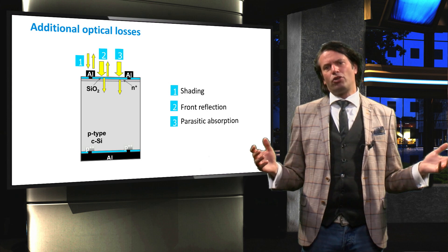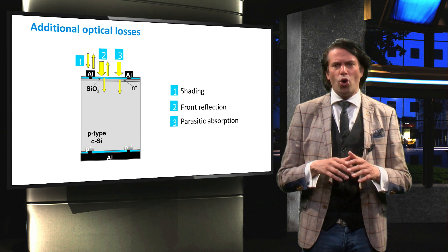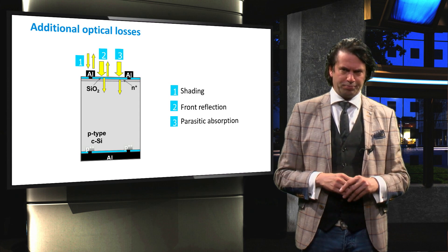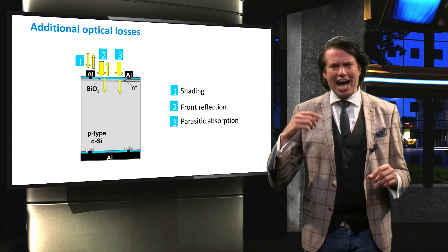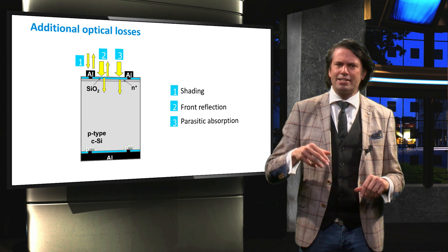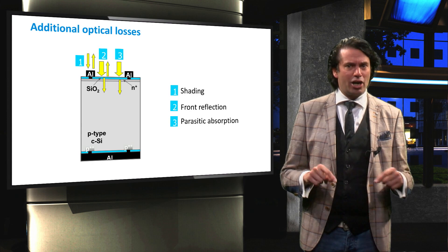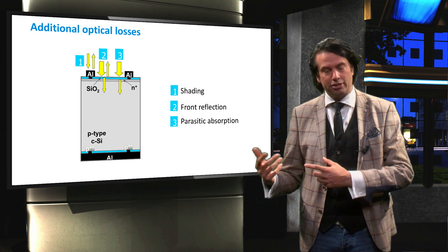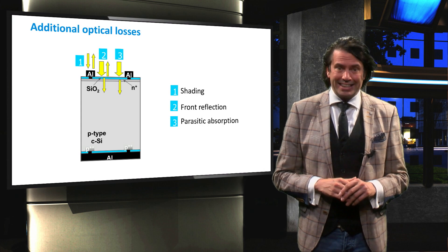The third additional optical loss concerns the notion that light is absorbed in all the layers of the solar cell. However, only the photovoltaic absorber layers contribute to the actual generation of charge carriers. This means that any light absorbed in the photovoltaic inactive layers are considered a loss mechanism. This loss mechanism is known as parasitic absorption.